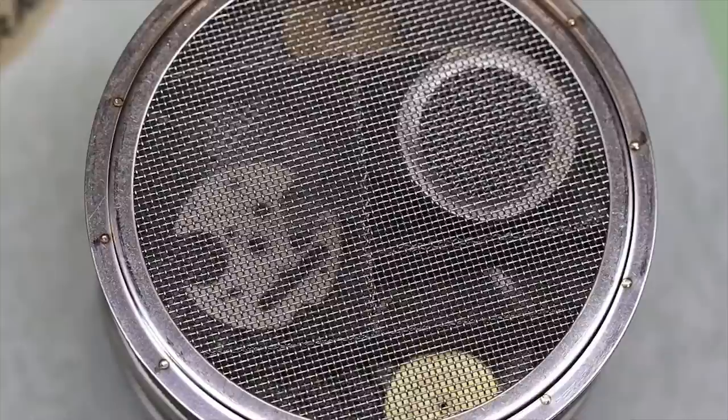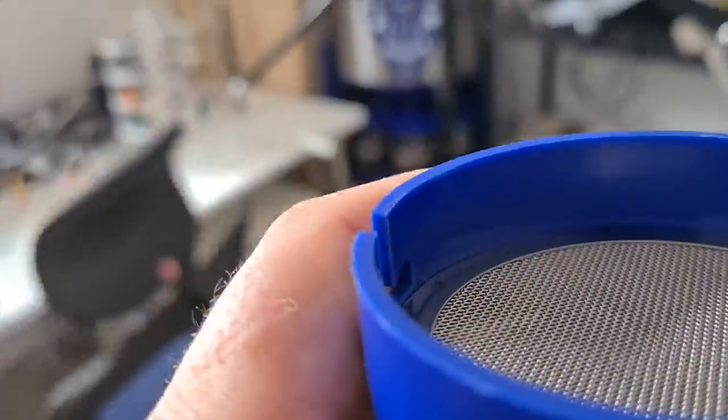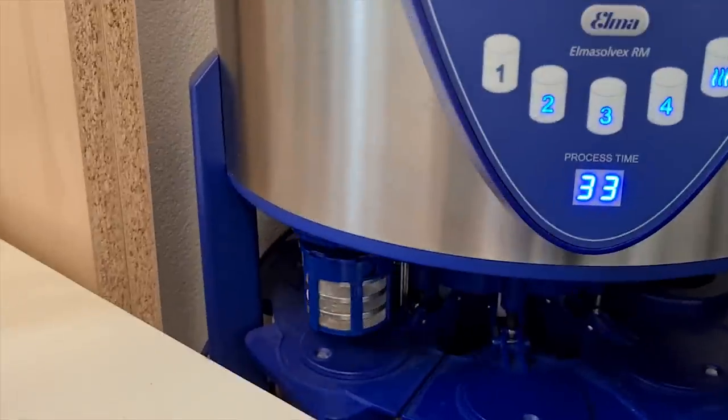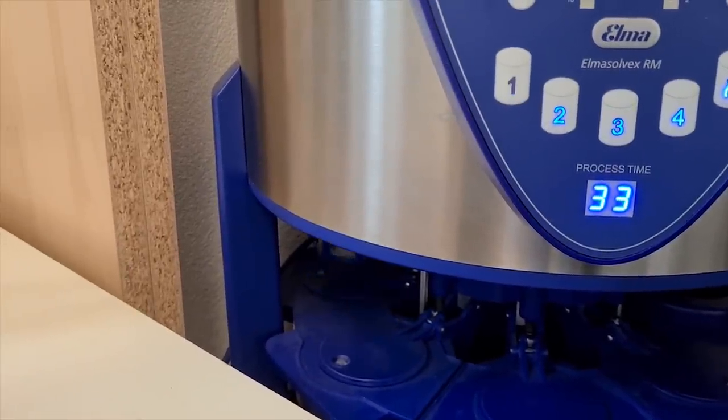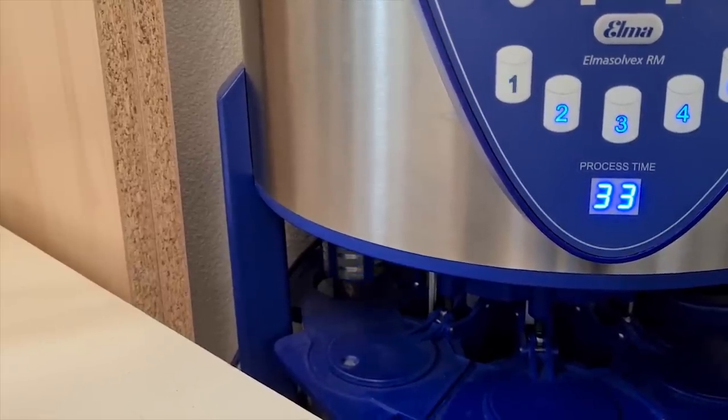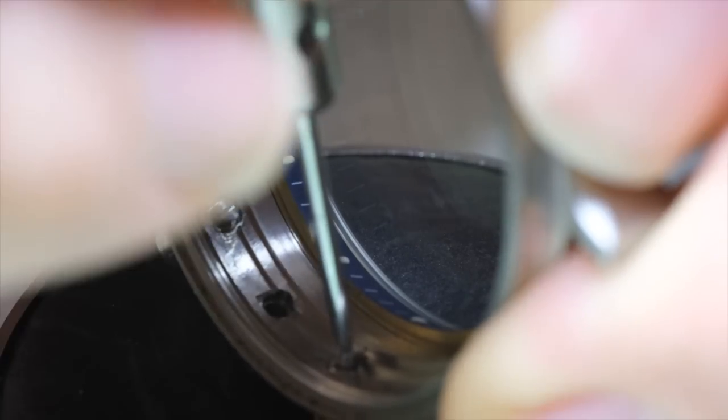Anyway, let's get all the parts in the basket and take it off to the cleaning machine. There are a couple of plastic parts fixed to the main plate that we're leaving on, otherwise we're not putting plastic in the cleaning machine.